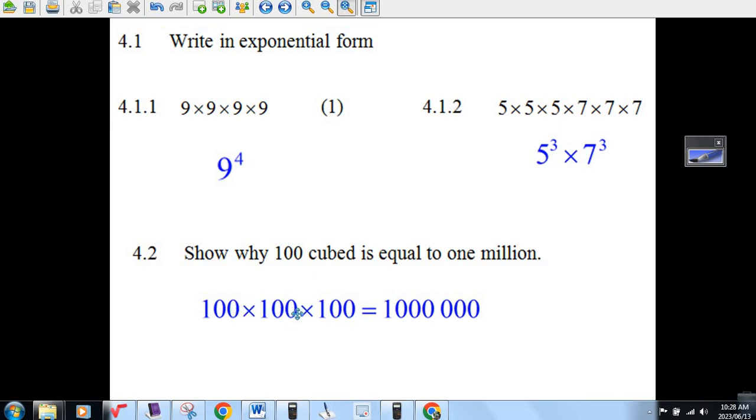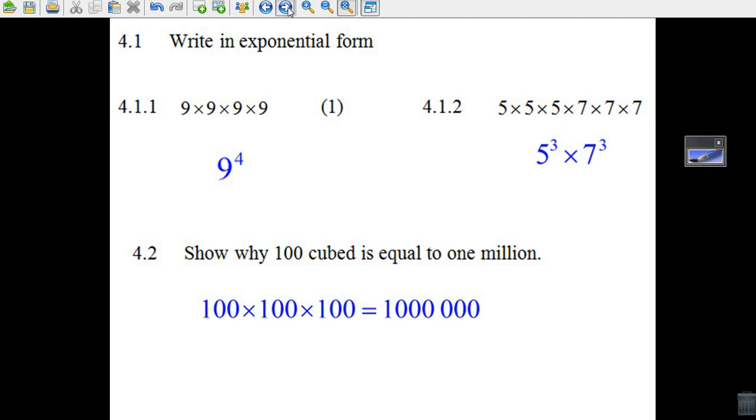But 100 times 100 times 100, count the zeros, there's six zeros, and you know that six zeros is 1 million. That's a million there. So there you go. There's the first question. I showed why 100 cubed is equal to 1 million.